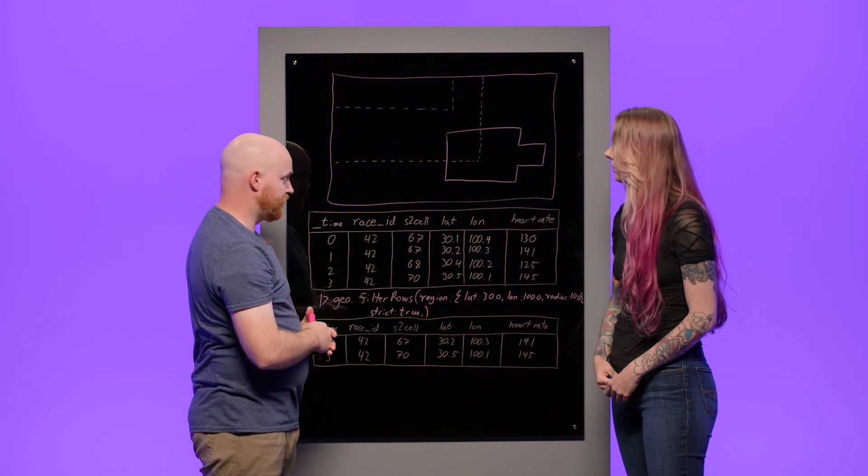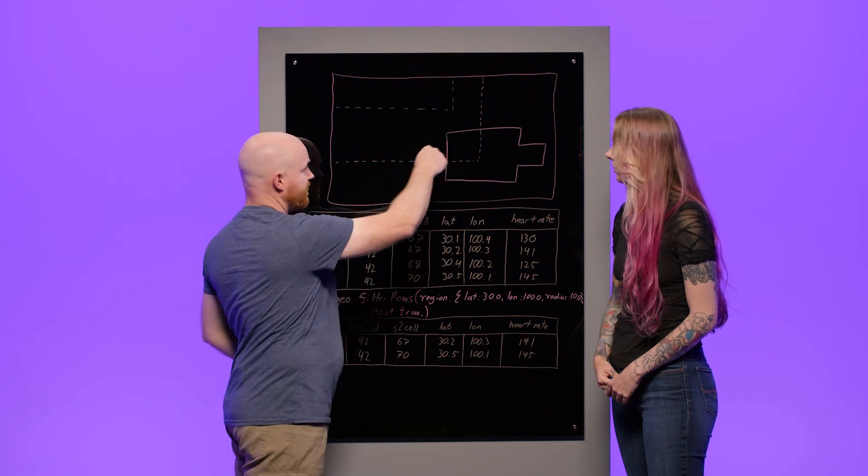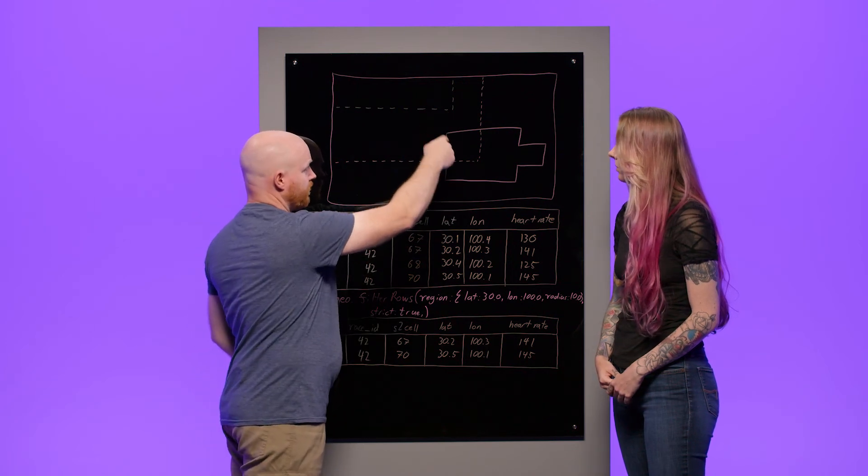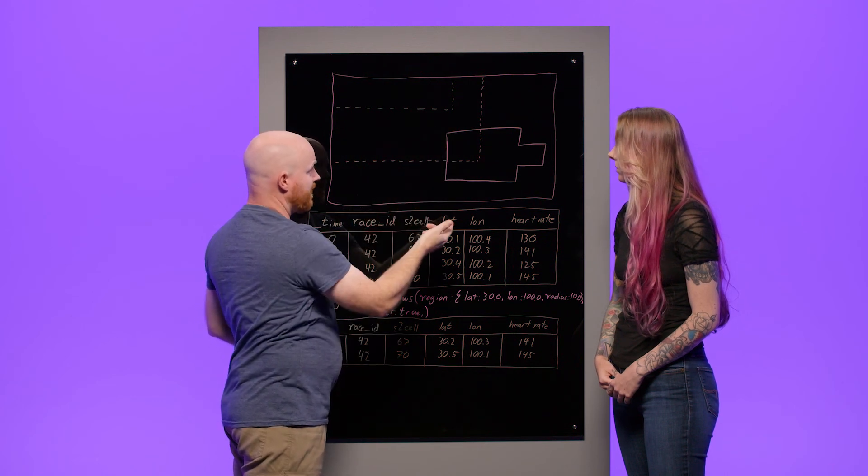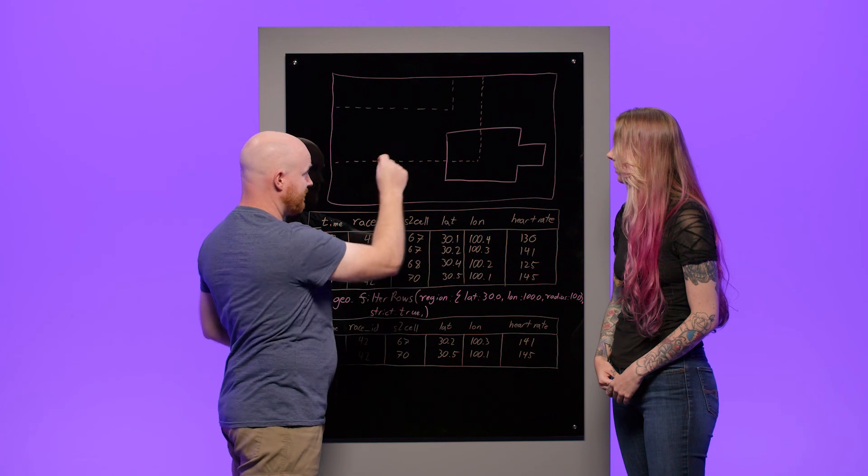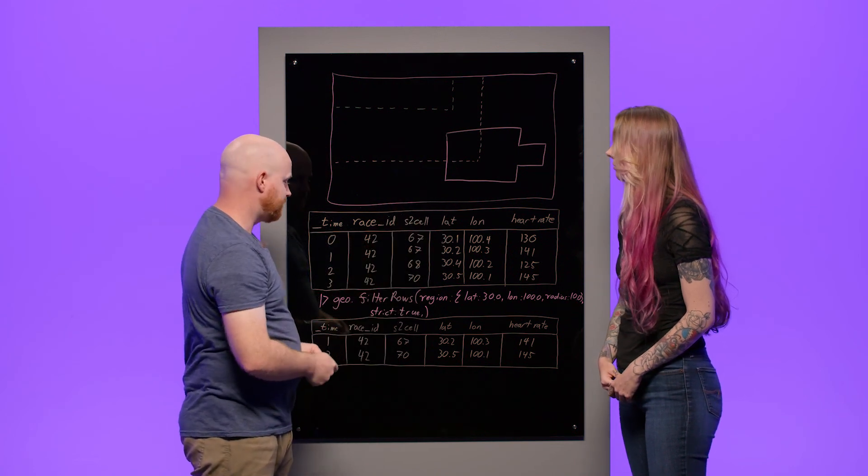But if you specify strict set to true, then after we've found the bits of the tracks that are in the same cells, we will do the extra math to determine whether or not it's really, truly inside the region or not. And so that's what strict is about. That makes sense.